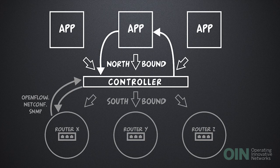So what about the Northbound APIs? Just like the devices communicate their status to the controller, the controller will use the Northbound APIs to present the state of the network services to the relevant applications. If an entire service is unable to work, for instance, the controller will inform the relevant application to process as appropriate.